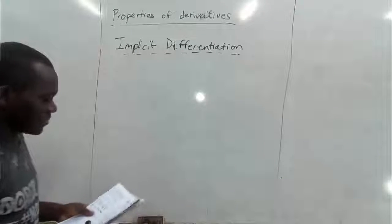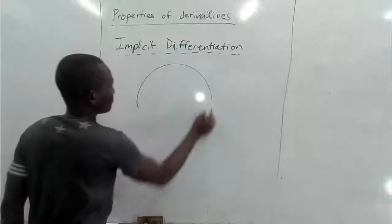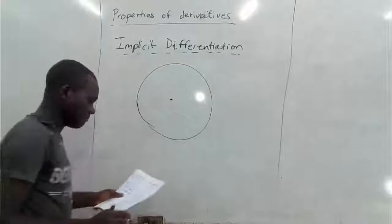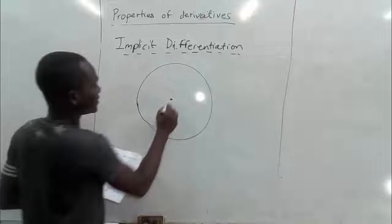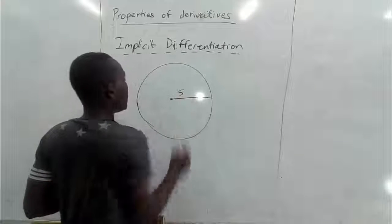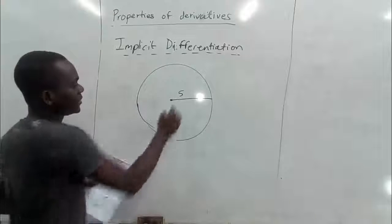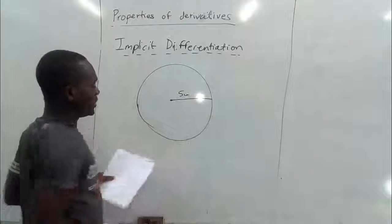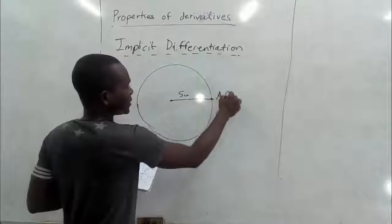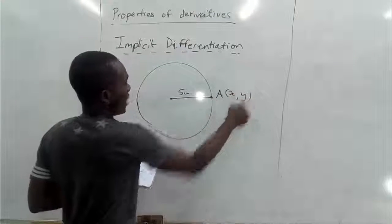Assuming we have a circle in the center here and let's see we have a radius of 5 centimeters and we also have a point here. Let's see point A which is x,y.